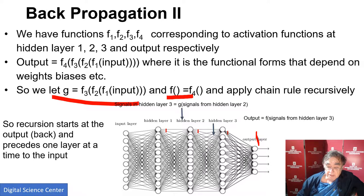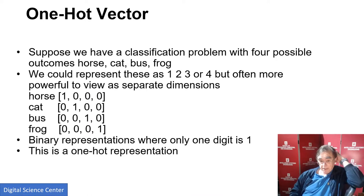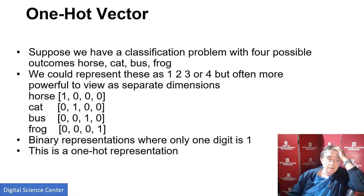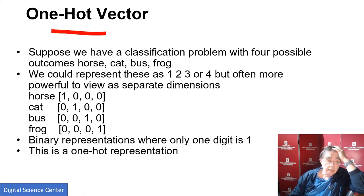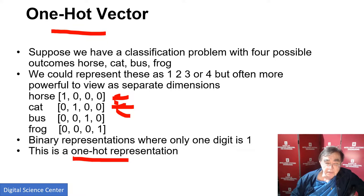I've already told you what a one-hot vector is — we actually used it in our first deep learning example. That one-hot vector had ten values for zero through nine. Here I just did four values: if you have four categories, these are the four representations — the one-hot representation. The structure of those networks is such that one-hot representations are much easier to deal with for many purposes, though they have the disadvantage of being rather inefficient.